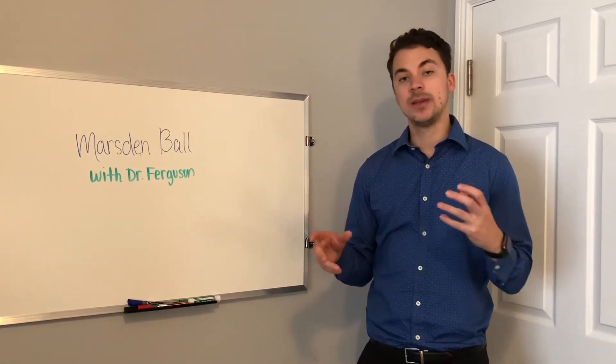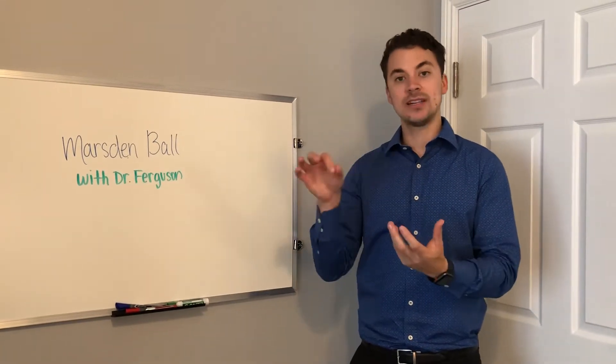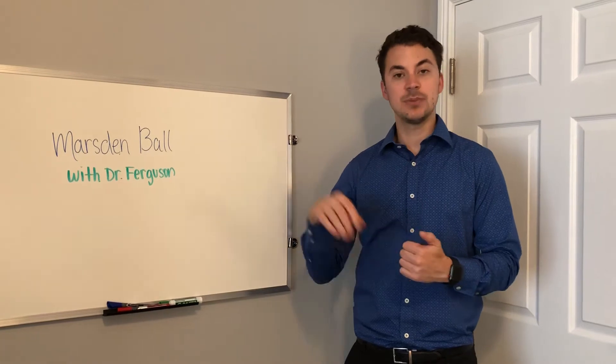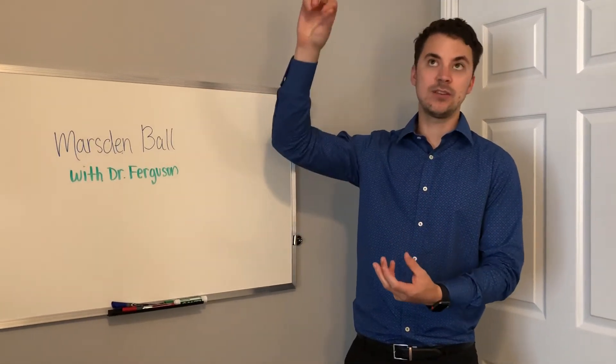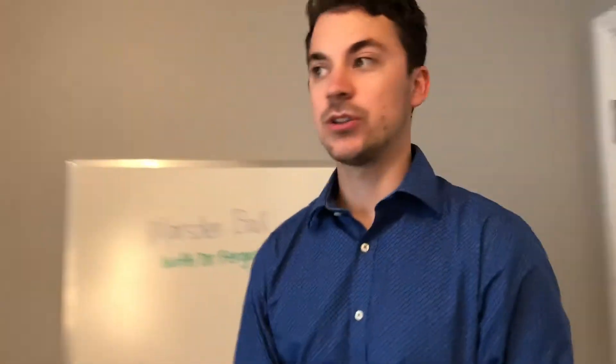This is something you can make at home by having a tennis ball or any other ball and writing some letters and numbers along the ball with a marker, and then taking a piece of string and taping it to the ball and the other end taping it to the ceiling. So we're going to walk over here now and do an exercise with the Marsden ball.